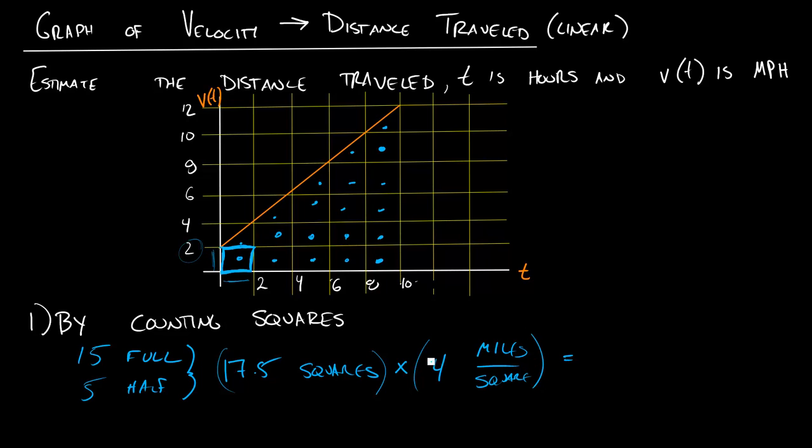And what I'll get out—you can type that in your calculator if you want—is that you traveled 70 miles. So counting squares works. You just have to make sure you count your number of squares and then count how much total change you get for each square: number of squares, total change per square.